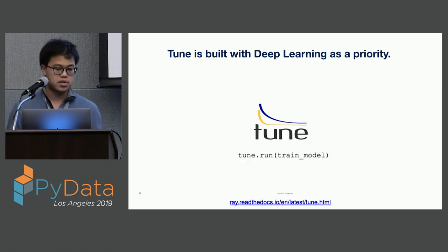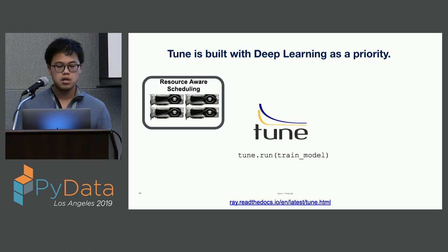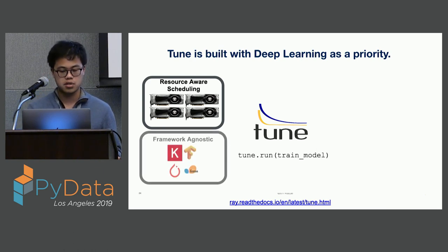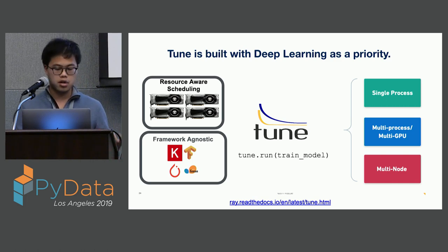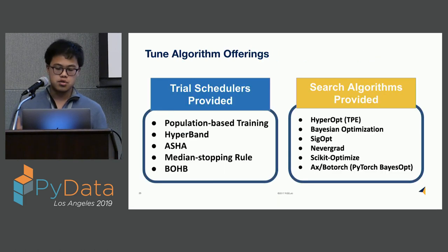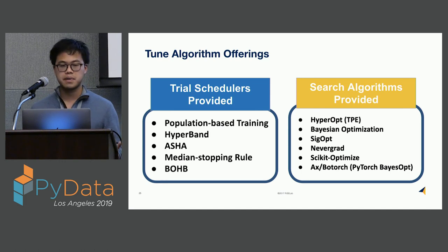TUNE is built with deep learning as a priority — you can effectively utilize and spread training across GPUs or multiple GPUs per trial. TUNE allows users to tune their model with any machine learning framework, and allows you to run hyperparameter tuning at any scale — from one single process to multiple GPUs to multiple nodes, all without changing your code. TUNE offers many algorithms including all the ones mentioned today, and integrates with many open-source hyperparameter search libraries such as Hyperopt and AX from Facebook, allowing you to transparently scale these across multiple GPUs and nodes.